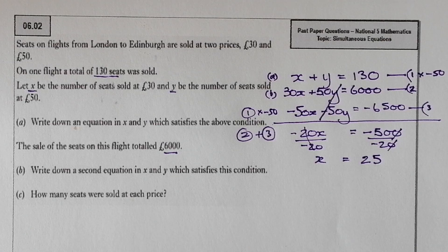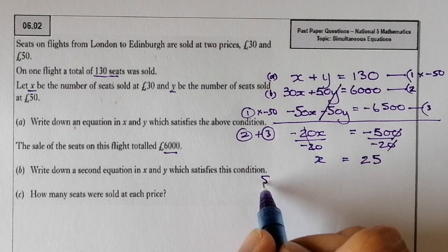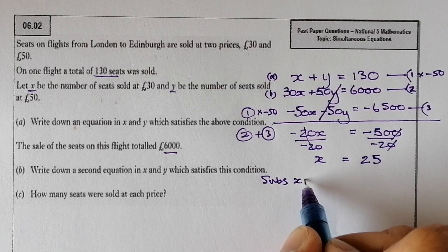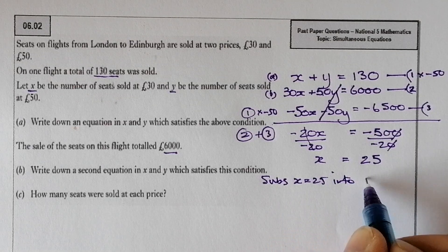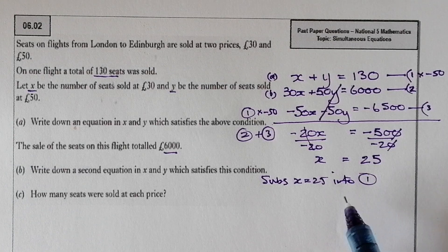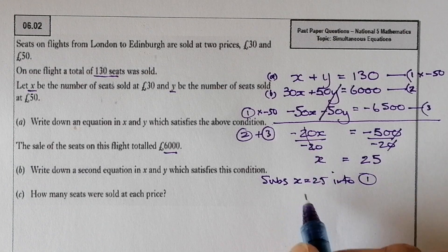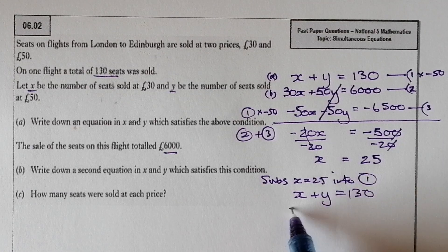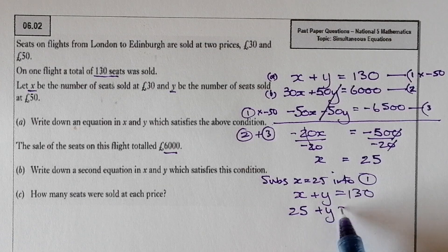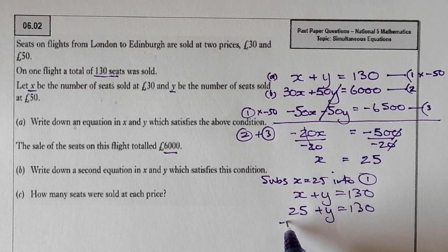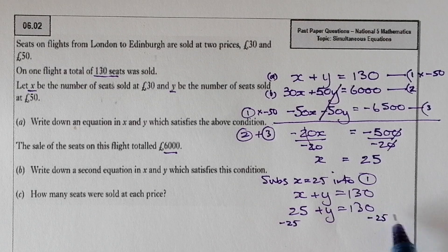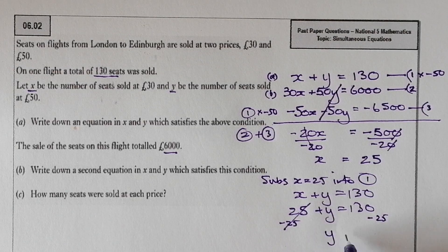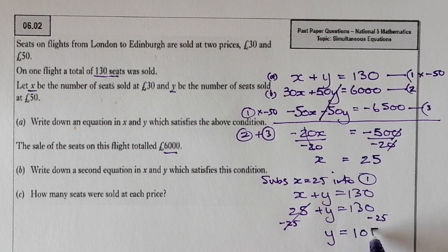Now substitute x = 25 into equation one, which is the simplest: x + y = 130. Substituting 25 in for x gives 25 + y = 130. Taking 25 from both sides leaves y = 105.